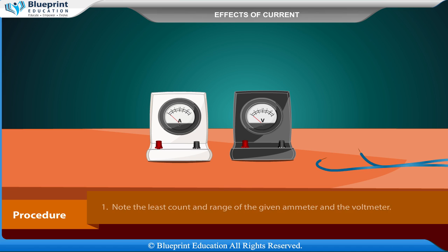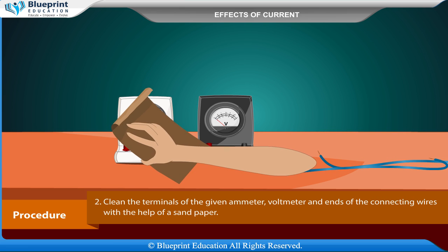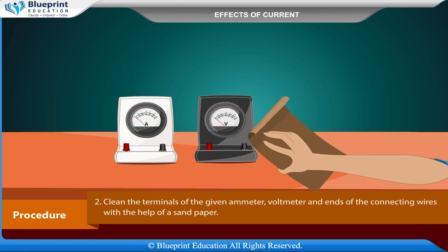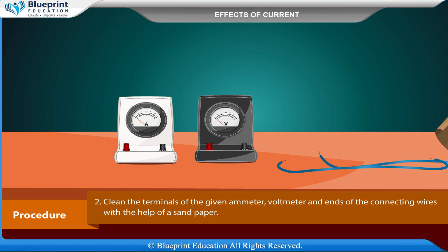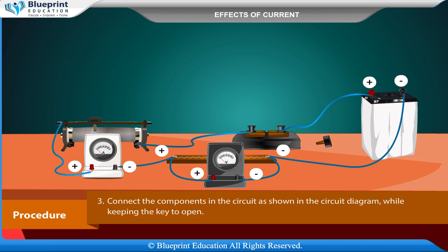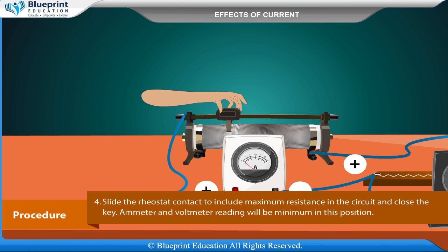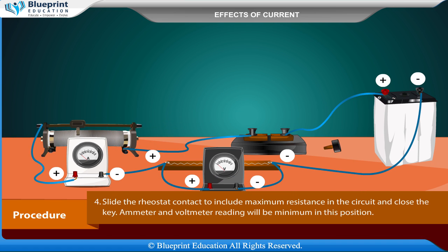Procedure: Note the least count and range of the given ammeter and the voltmeter. Clean the terminals of the ammeter and voltmeter with the help of a sandpaper. Also clean the ends of the connecting wires using sandpaper. Connect the components in the circuit as shown in the circuit diagram while keeping the key open.